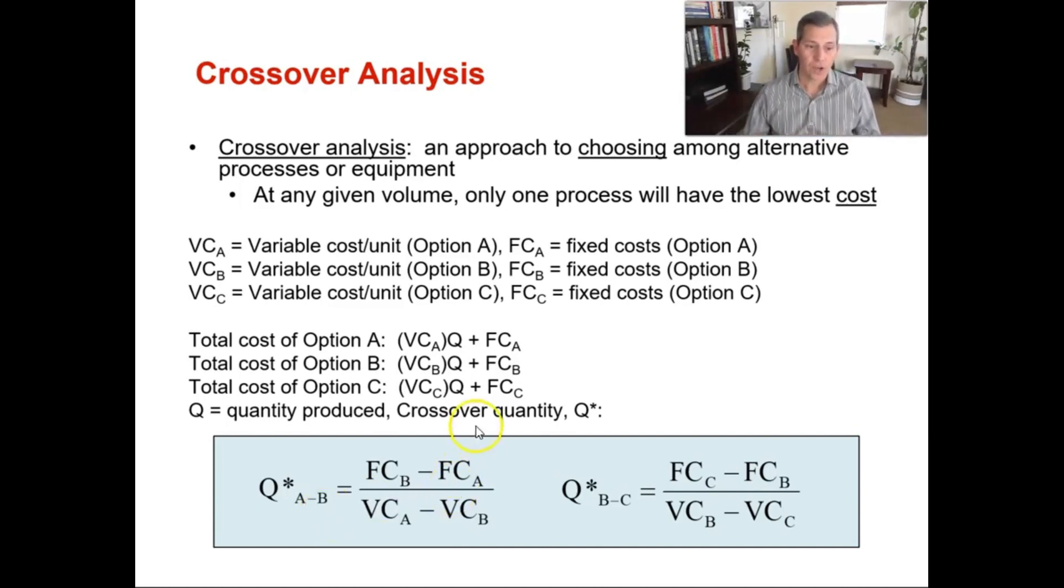Q is your quantity produced, and the crossover quantity is Q*. For the first formula, where A crosses over B, that's fixed cost of B minus fixed cost of A, over variable cost of A minus variable cost of B. Notice that A and B are switched on the bottom. Then for the crossover point of B and C, it's fixed cost of C minus fixed cost of B, over variable cost of B minus variable cost of C. Again, B and C are switched on the bottom for your variable costs. Be very careful with this formula when you have three different options.